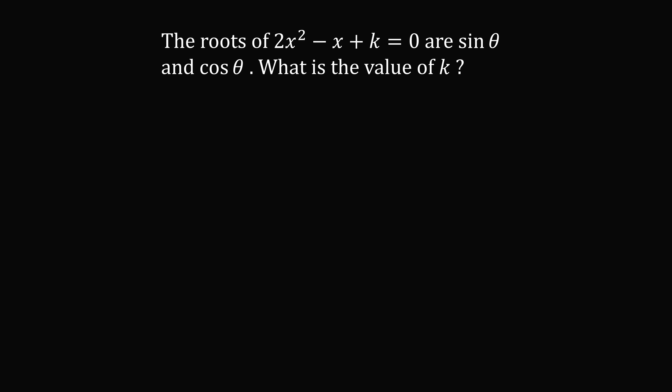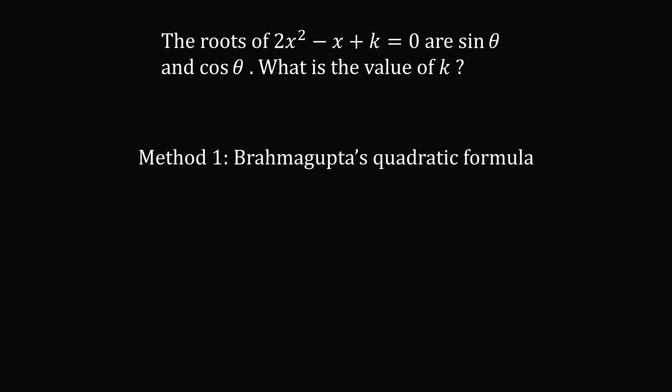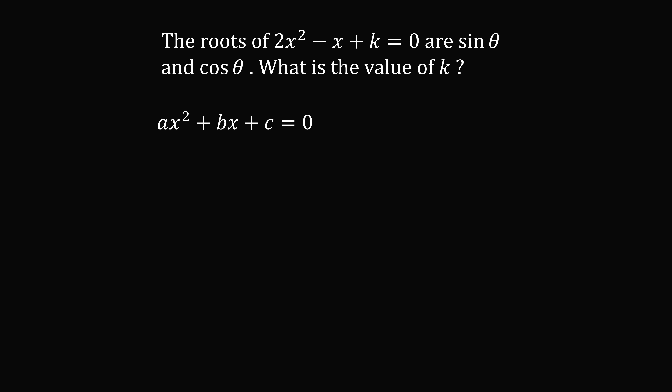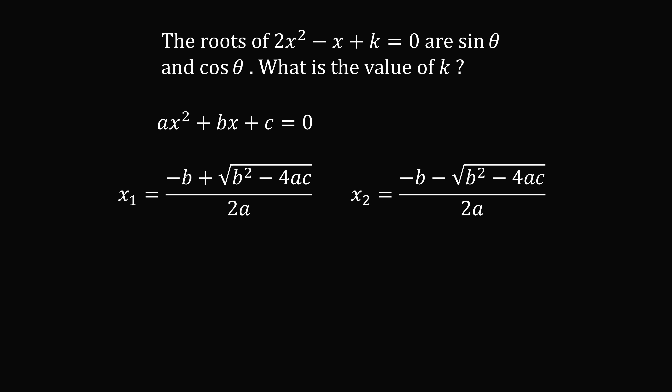I will present two equivalent ways to solve the problem. The first uses the quadratic formula. A general quadratic equation has the form ax squared plus bx plus c equals zero. In this particular quadratic equation, a is equal to 2, b is equal to negative 1, and c is equal to k. So we just substitute into the formula.